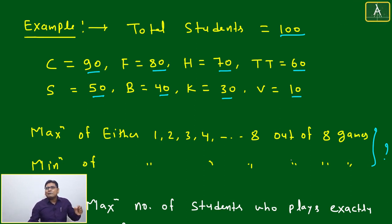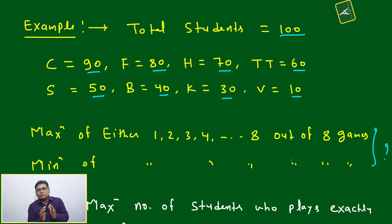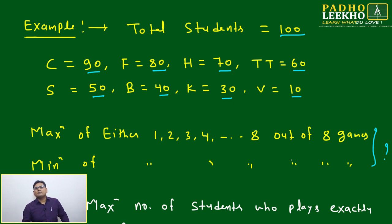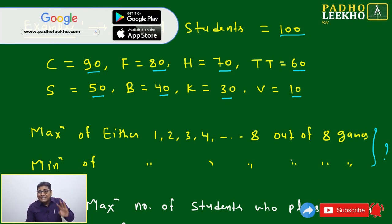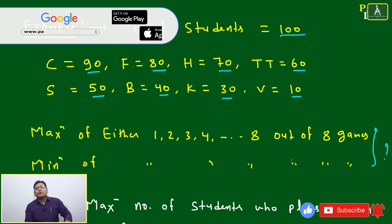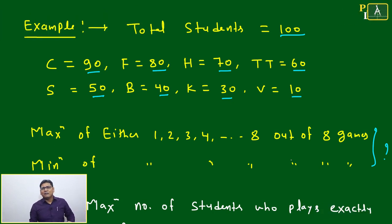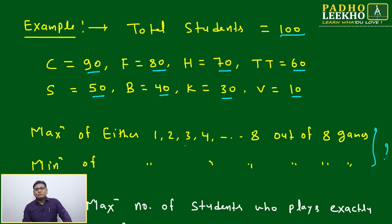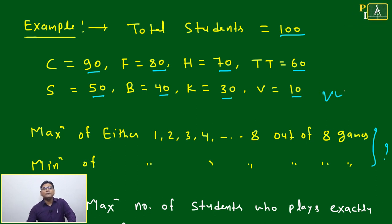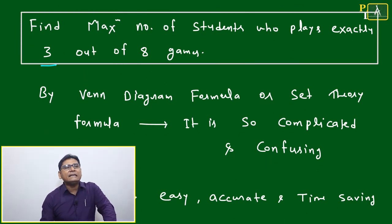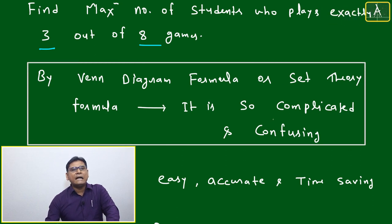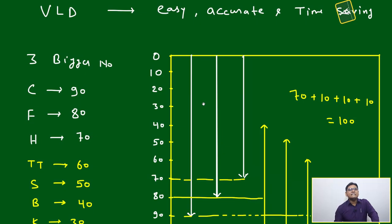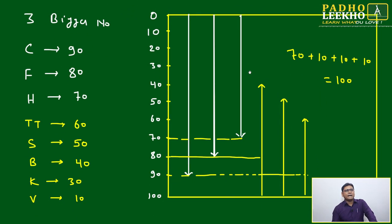Without the VLD technique, this is very difficult. Using set theory formulas for even three variables gives a long formula — imagine how complicated it becomes for eight variables. That formula would span multiple lines and involve highly complex calculations, making it impractical for competitive exams. So we apply a shortcut — a common-sense technique called VLD — to get the answer quickly and accurately.